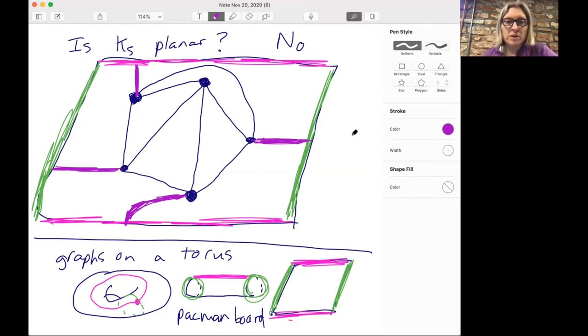So is K5 planar? No. But the really cool thing is that K5 can be drawn on a torus without edges crossing.